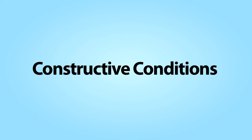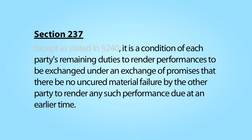This is where constructive conditions enter the picture. Section 237 of the Restatement of Contracts sets forth one of the most important constructive conditions in contract law. This section creates a constructive condition to the effect that, in a bilateral contract, each party's future performance obligation is contingent on there being no uncured material breaches of the other party. In other words, if one party materially breaches a contract, the non-breaching party's further performance obligations are suspended. If the breach is not cured or otherwise excused, then that party will be considered to have totally breached the contract and the non-breaching party can terminate the contract and walk away.